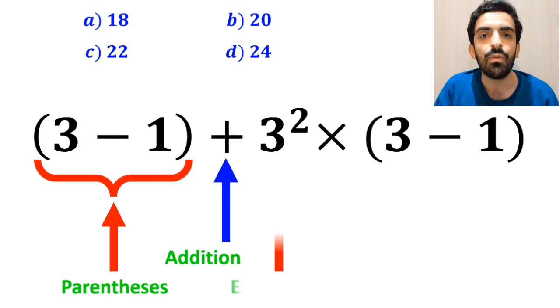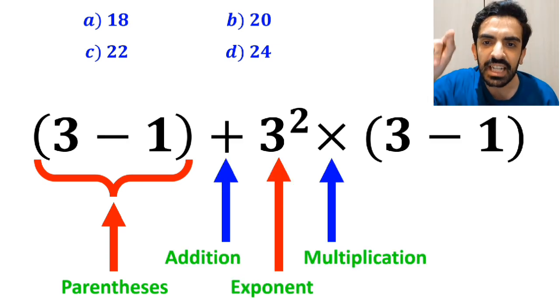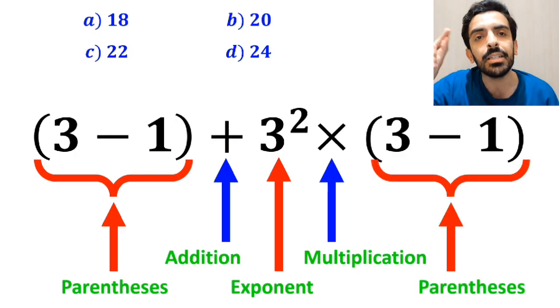first we have parenthesis, then an addition sign, followed by an exponent, then a multiplication, and finally another parenthesis.